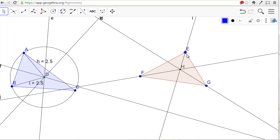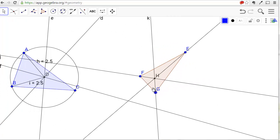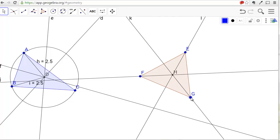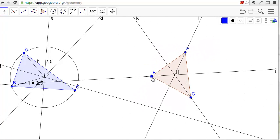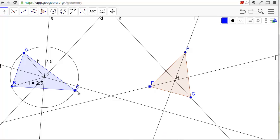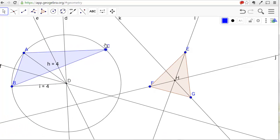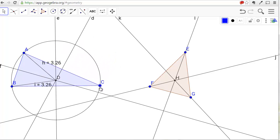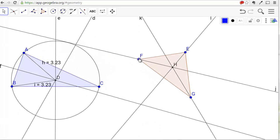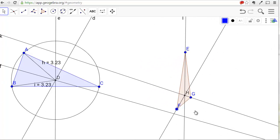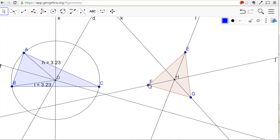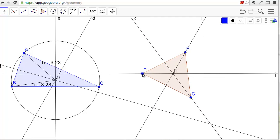If we move our vertices around, we see that that point is consistent. And unlike the point of concurrency for the perpendicular bisectors, what do you notice about that particular point? The point of concurrency stays within the triangle.